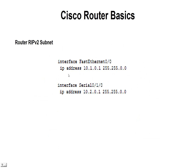We have our interfaces to set. We're going to set the first FastEthernet to 10.1.0.1 — that'll be the gateway for the PC. Then on the serial interface, we're going to set it to 10.2.0.1, and we're going to use 255.255.0.0 for both of those subnet masks.